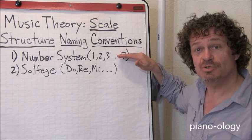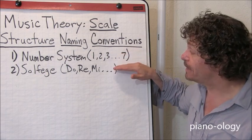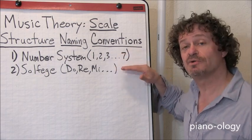The number system, one through seven, and solfege: do, re, mi, fa, sol, la, ti, do.